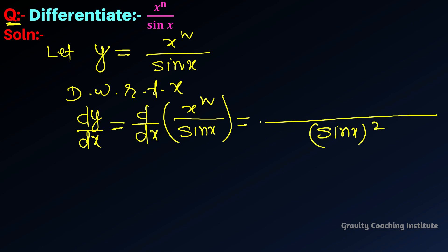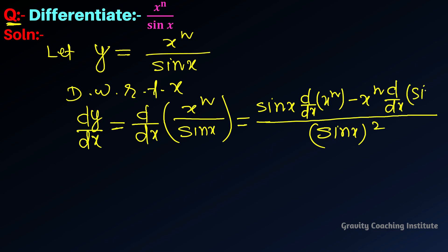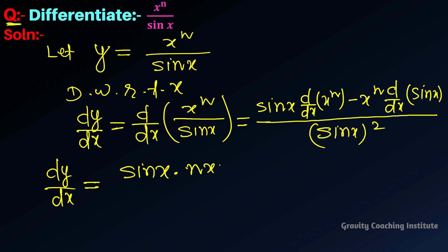Applying the quotient rule: sin x whole square in the denominator. The numerator is sin x into derivative of x to the power n, minus x to the power n into derivative of sin x. So dy upon dx equals: derivative of x to the power n is n x to the power n minus 1, and derivative of sin x is cos x.